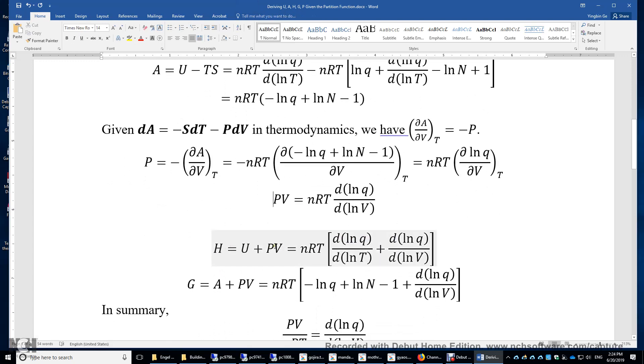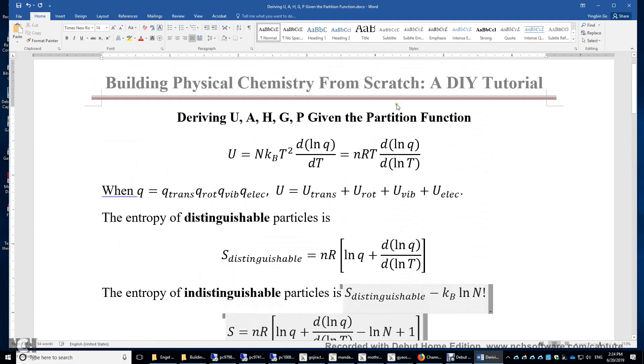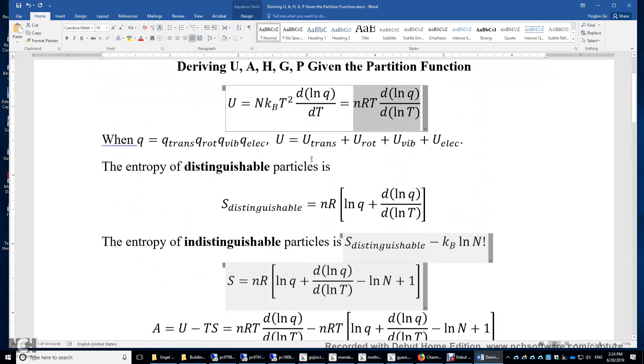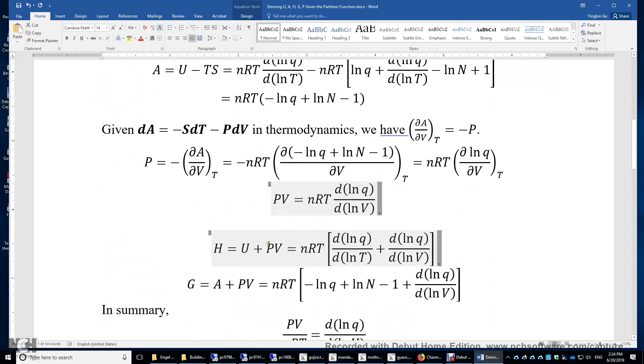And then H equals U plus PV, so we combine this U here, nRT times dLnq over dLnT, plus PV. Again, PV is nRT times dLnq over dLnV. And then we combine these two terms. We have nRT times the sum of dLnq over dLnT plus dLnq over dLnV. So you can see the symmetry here. And this is simple and convenient by neglecting the subscripts. But remember, when you take this derivative, you have to hold volume constant. When you take this derivative of Lnq over LnV, you hold temperature constant.